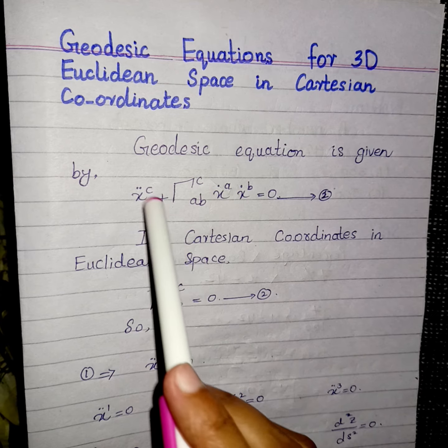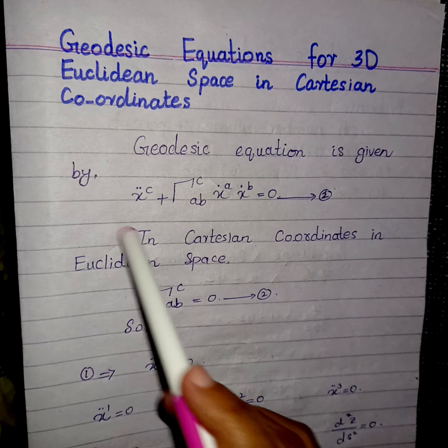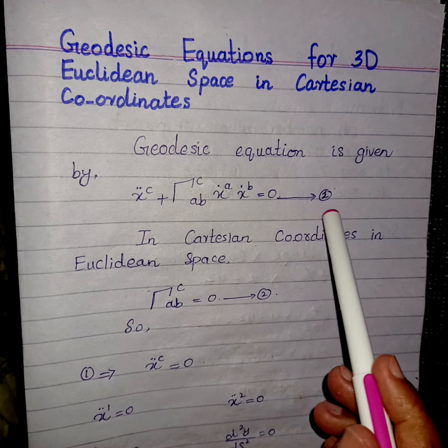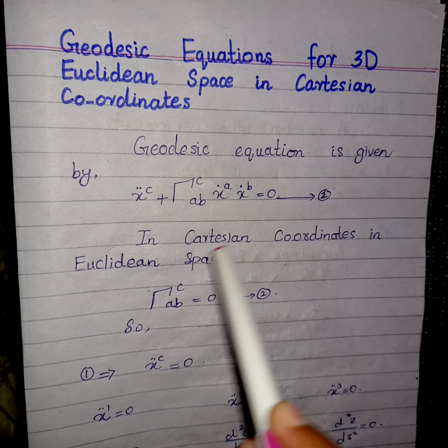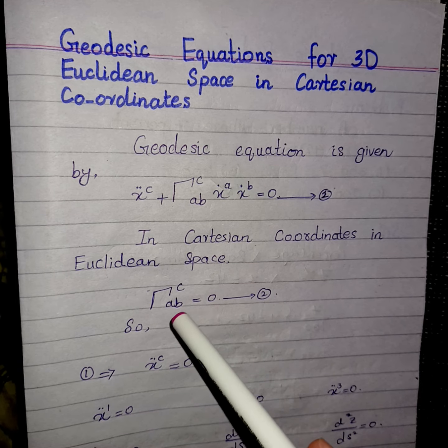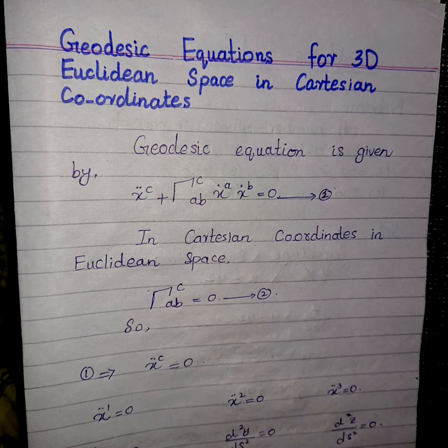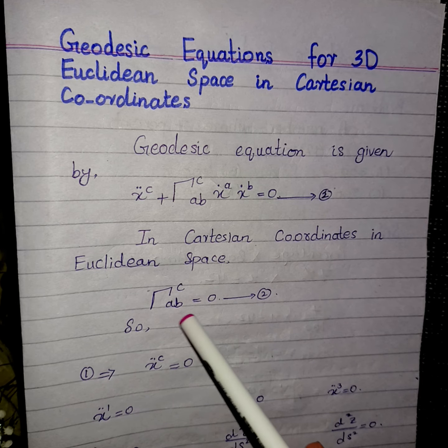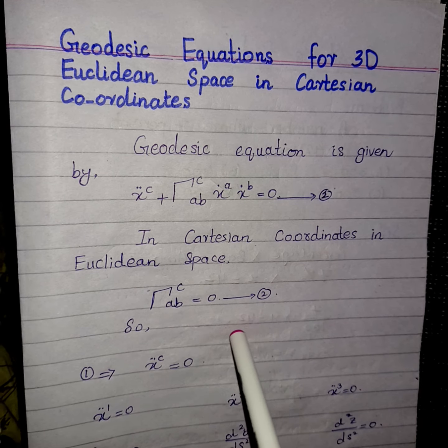We know that the geodesic equations are given by this formula in equation number one. Now, in Cartesian coordinates or in Euclidean space, we are dealing with a flat space where the Christoffel symbols are equal to zero.